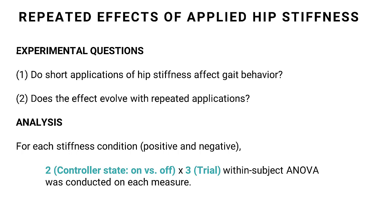Our first analysis asked the following two questions. One, do short applications of hip stiffness affect gait behavior? And two, how does this effect evolve with repeated applications? To address these questions, for each stiffness condition—positive and negative—we performed a two-by-two within-subject analysis of variance, or ANOVA, on each measure. Our first factor, controller state, was either on or off, and the second factor was trial, which was either trial one, two, or three.